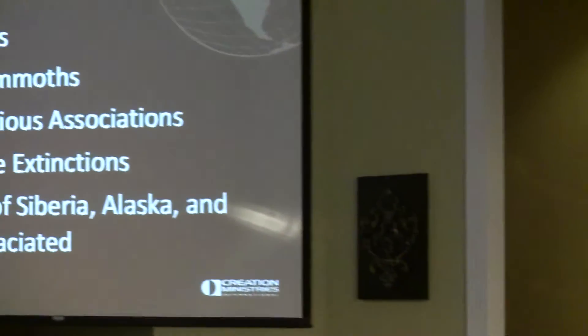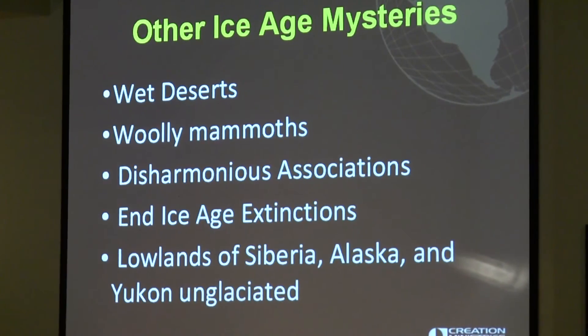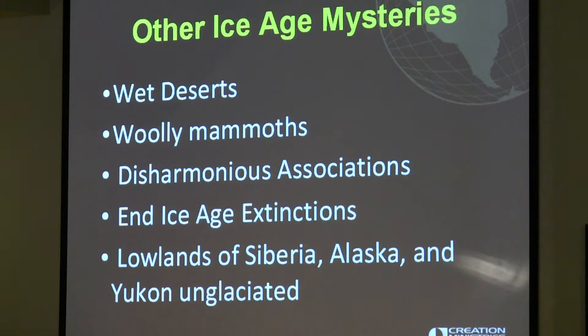Besides the mystery of the cause of the ice age, there are many subsidiary mysteries — that's kept me busy for 35 years. Five of them are: wet deserts, woolly mammoths, disharmonious associations, end-ice-age extinctions, and why the lowlands of Siberia, Alaska, and the Yukon were unglaciated.